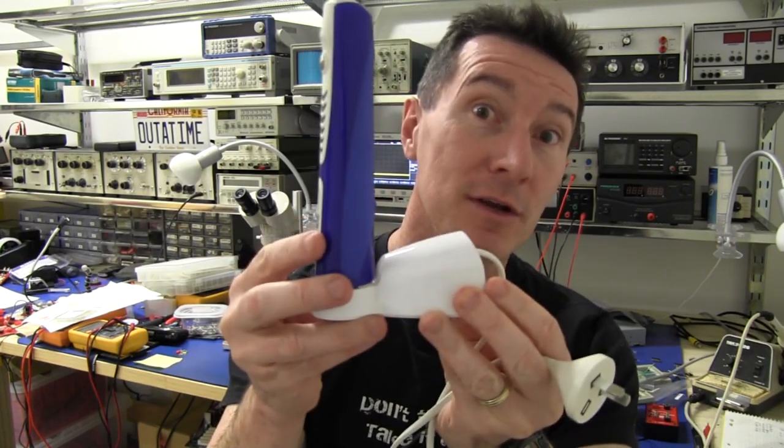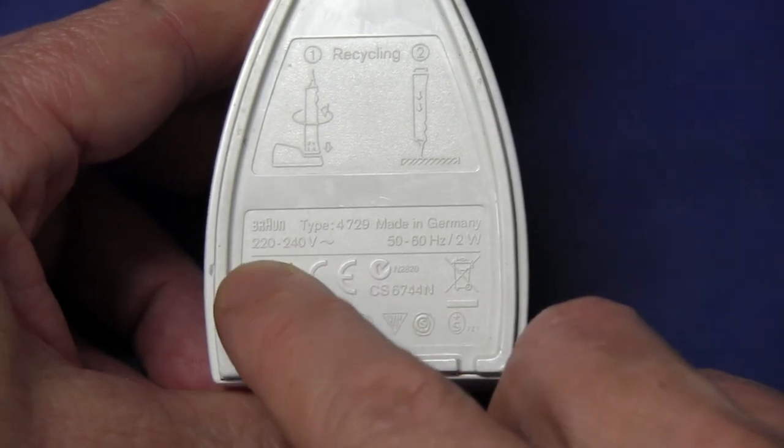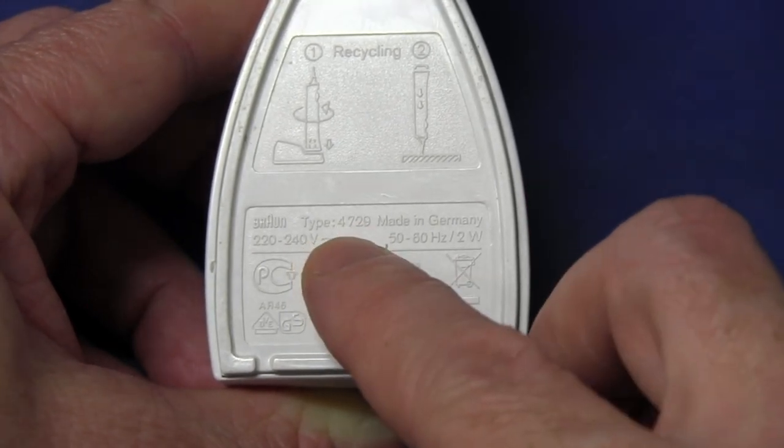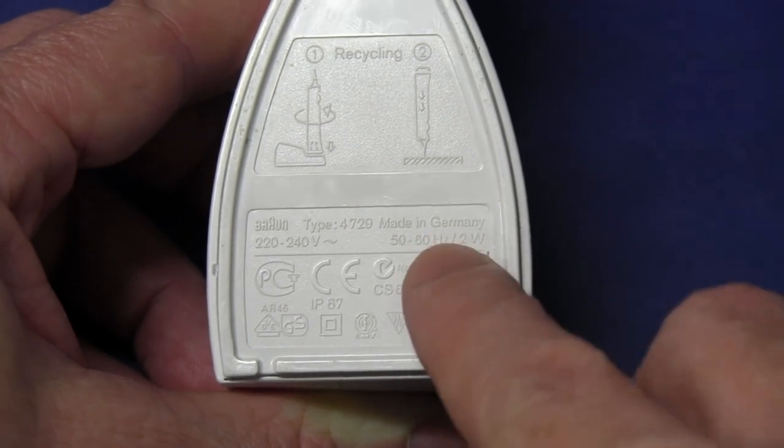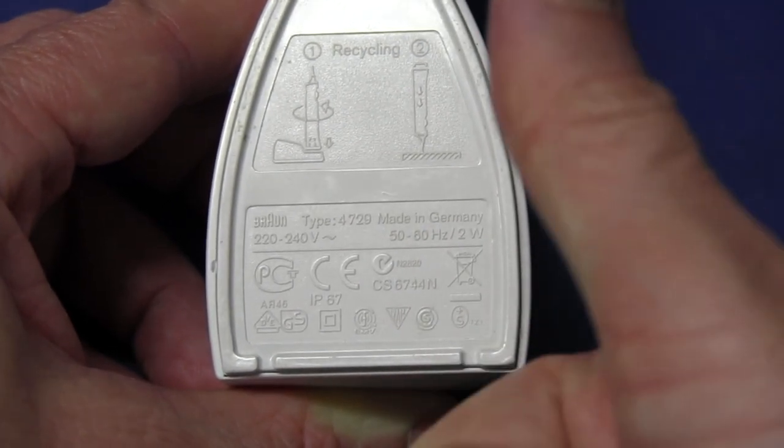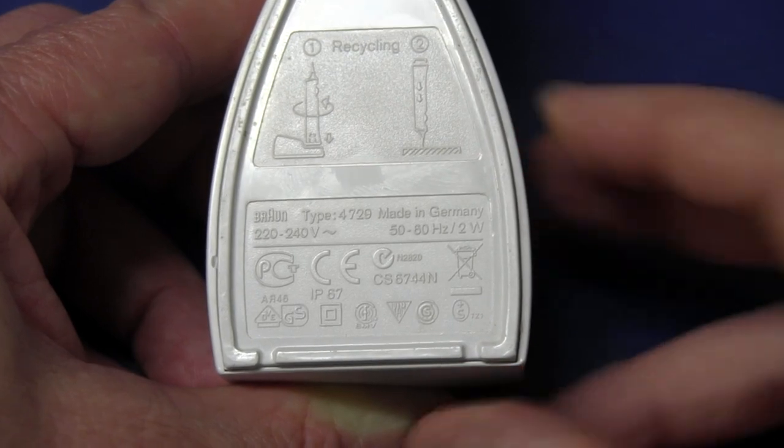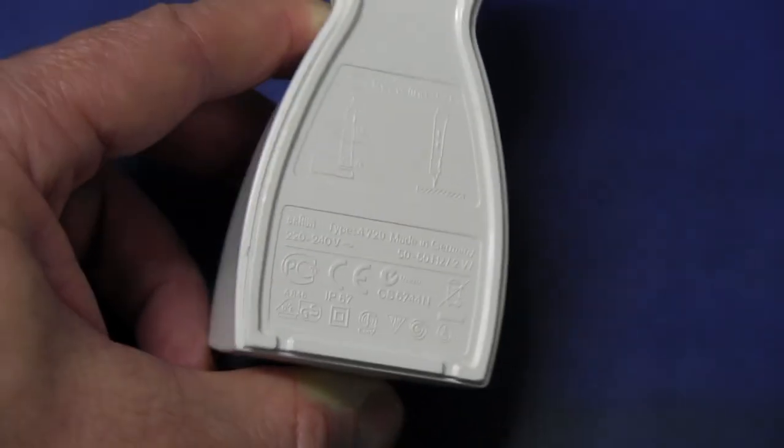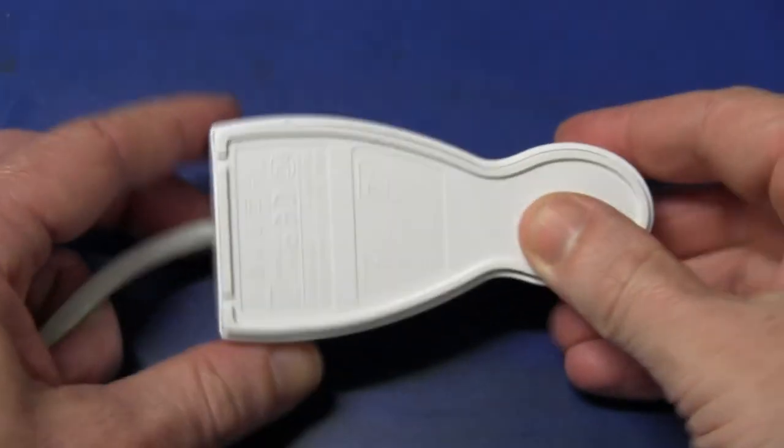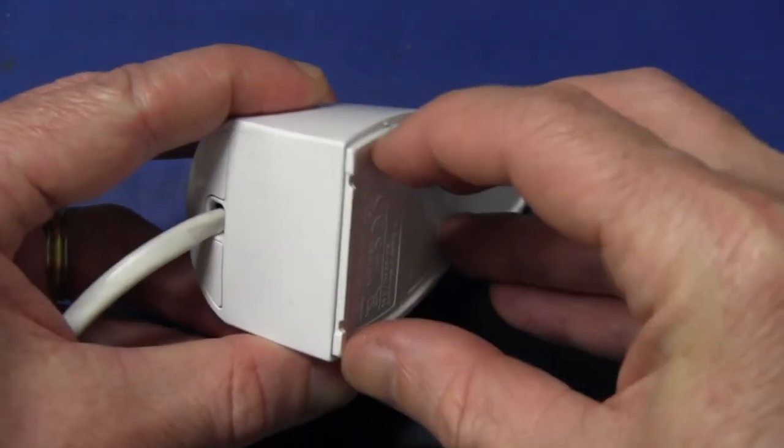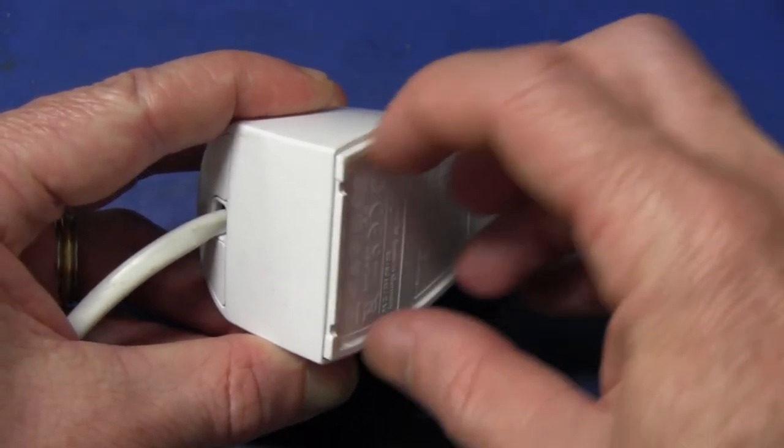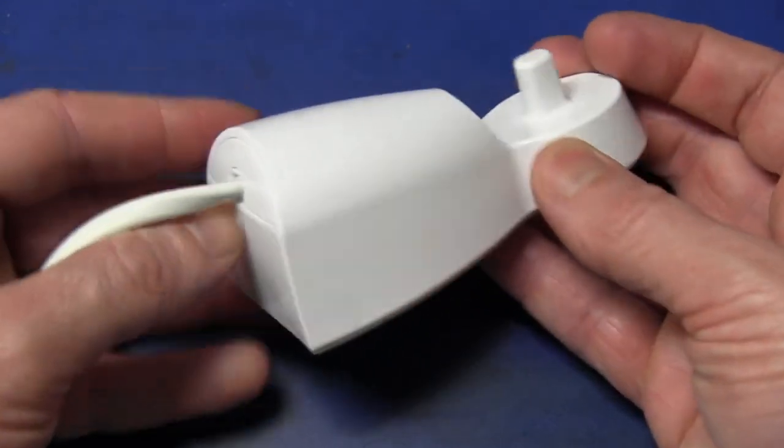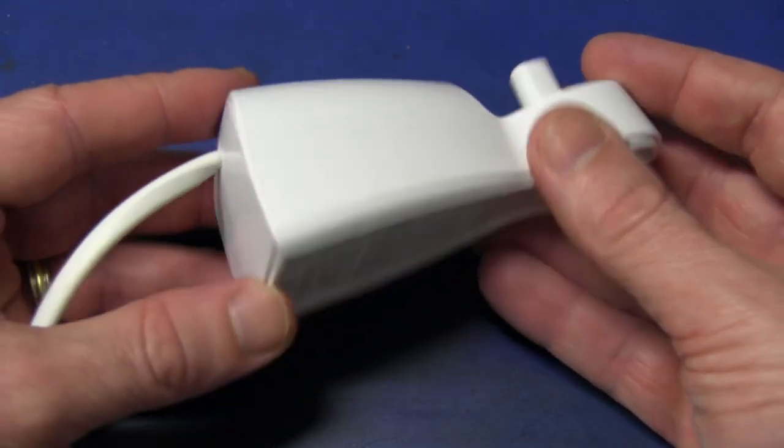Here's the charger part of it. This one's specifically 220 to 240 volts, not the universal type. Model number 4729, made in Germany. It's 2 watts, 50-60 hertz only. It doesn't look like this sucker is going to be easy to open. Looks like it's maybe heat sealed around the edges or something like that.